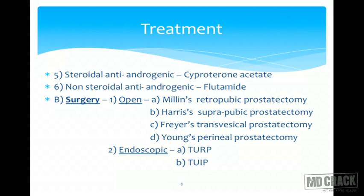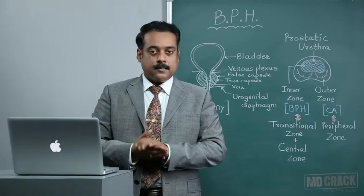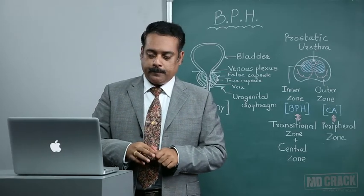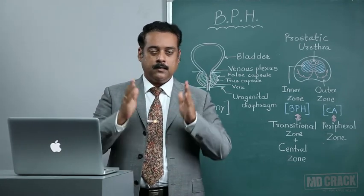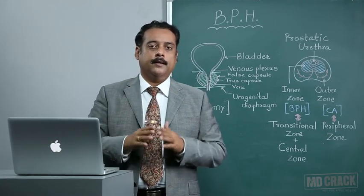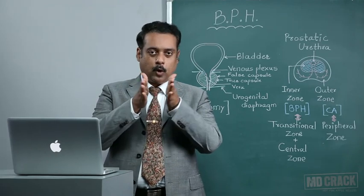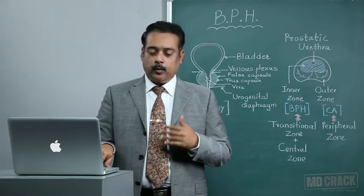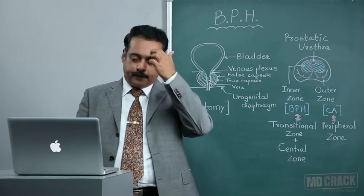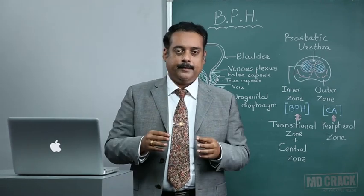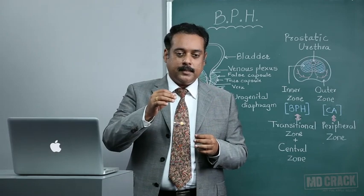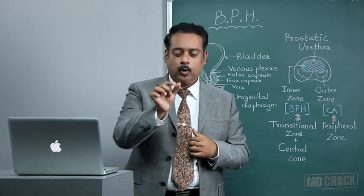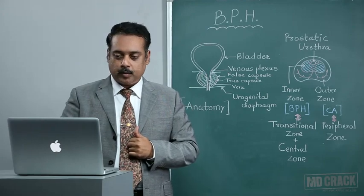Endoscopically, the gold standard treatment for BPH is TURP — transurethral resection of the prostate. It is done totally through a cystoscopic approach where the entire prostate is visualized, both median lobes are evaluated, and the urethra compressed by the two median lobes is restored. Second, one can do a transurethral incision of the prostate, in which a simple incision is made and the central core portion of the enlarged prostate gland is removed.